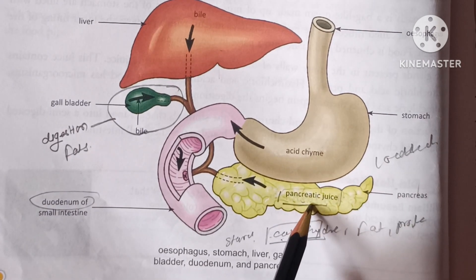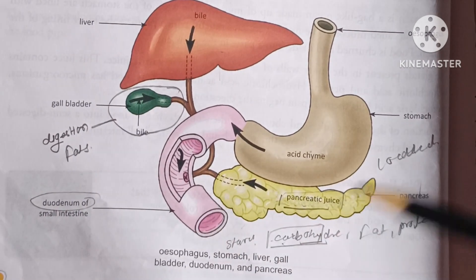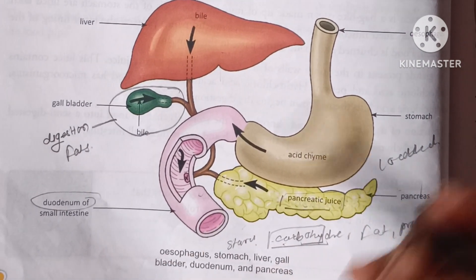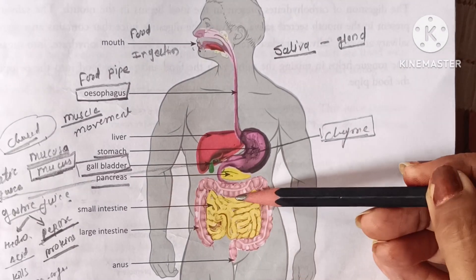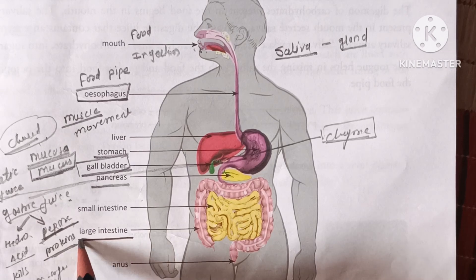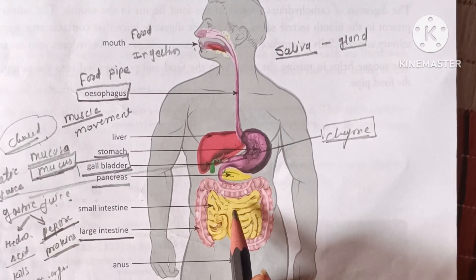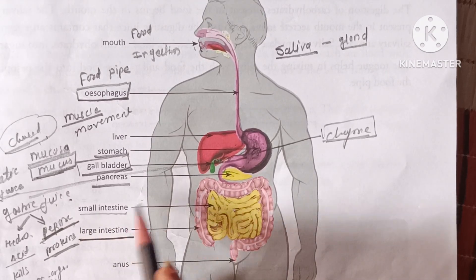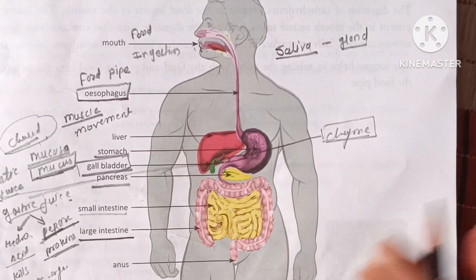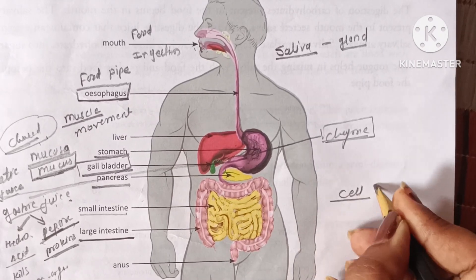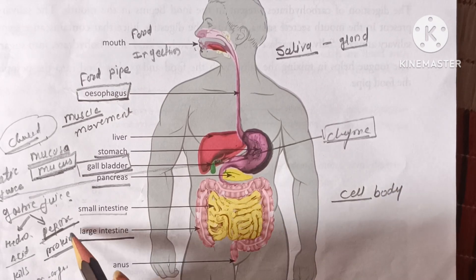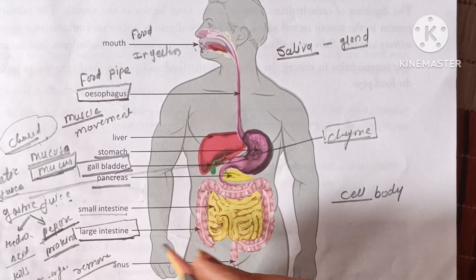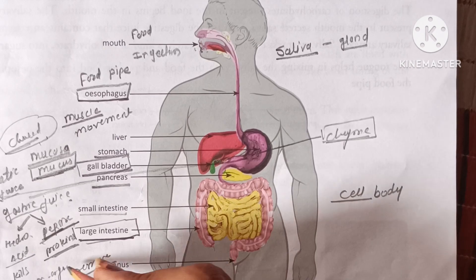After the small intestine, the food goes into the large intestine. In the small intestine, the food is completely converted into simple form, and those simple substances are absorbed and used by the cells of the body.